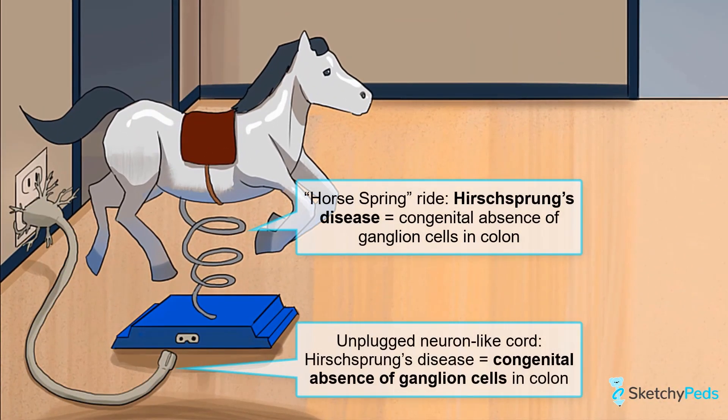Hirschsprung's disease is the congenital absence of ganglion cells in the colon, hence its other name, congenital aganglionic megacolon. This occurs when the ganglion cells fail to fully migrate during fetal development, shown here by this unplugged neuron-like power cord. Without ganglion cells, the affected bowel is tonically contracted and unable to relax, resulting in an obstruction which causes dilation of the bowel proximal to this point.